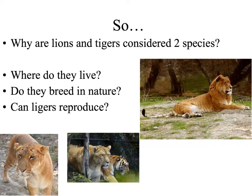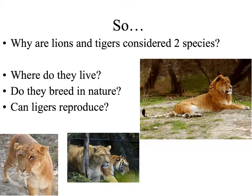An interesting example of this hybrid situation is when lions and tigers are bred together. Several reproductive barriers can occur between these two groups. The first has to do with habitat: in nature, lions and tigers are generally not found together and their populations will not breed or mix. In zoos, we do sometimes see ligers being born when lions and tigers are housed in the same enclosure. However, these ligers are hybrids that are sterile.